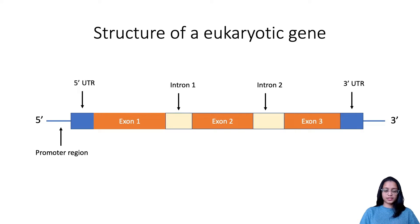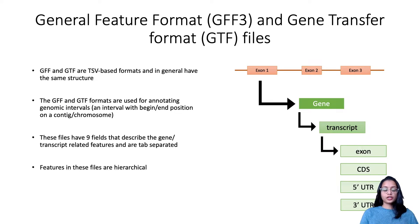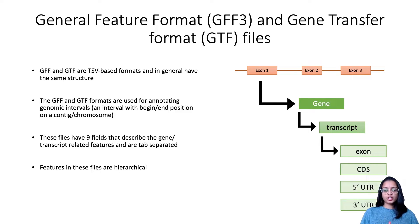General Feature Format (GFF) and Gene Transfer Format (GTF) both store information about genomic features. Looking at the contents of these files, you will find various lines providing genomic information and additional information about genes and their features. Both GFF and GTF have nine mandatory columns and are tab-separated. Although GTF is borrowed from GFF format, GFF3 is considered better at describing genomic features and allows for more detailed annotations.